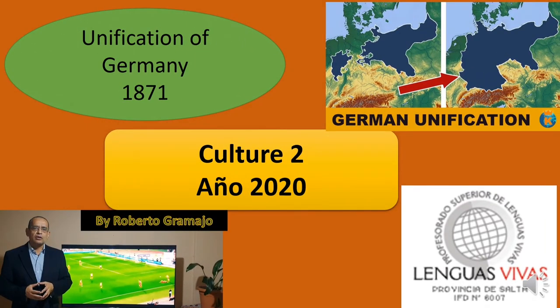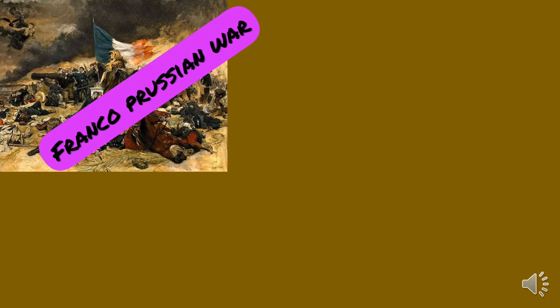Hi everybody, how are you? I hope you are all right. Today we are going to deal with the unification of Germany. It happened in 1871. What you have to understand is that before 1871, Germany was not Germany. There were different states that belonged to the Germanic Confederation, but it was not called Germany. So we are going to deal with this process of unification in Germany. We are also going to talk about the Franco-Prussian War, which was vital for the unification of Germany.